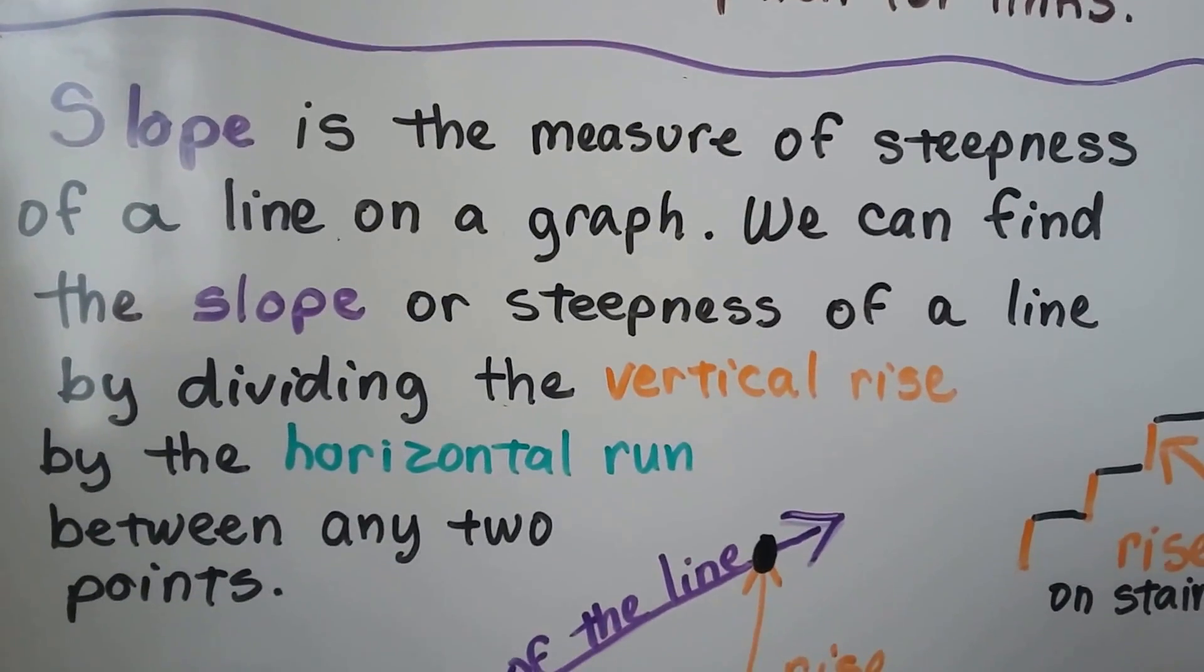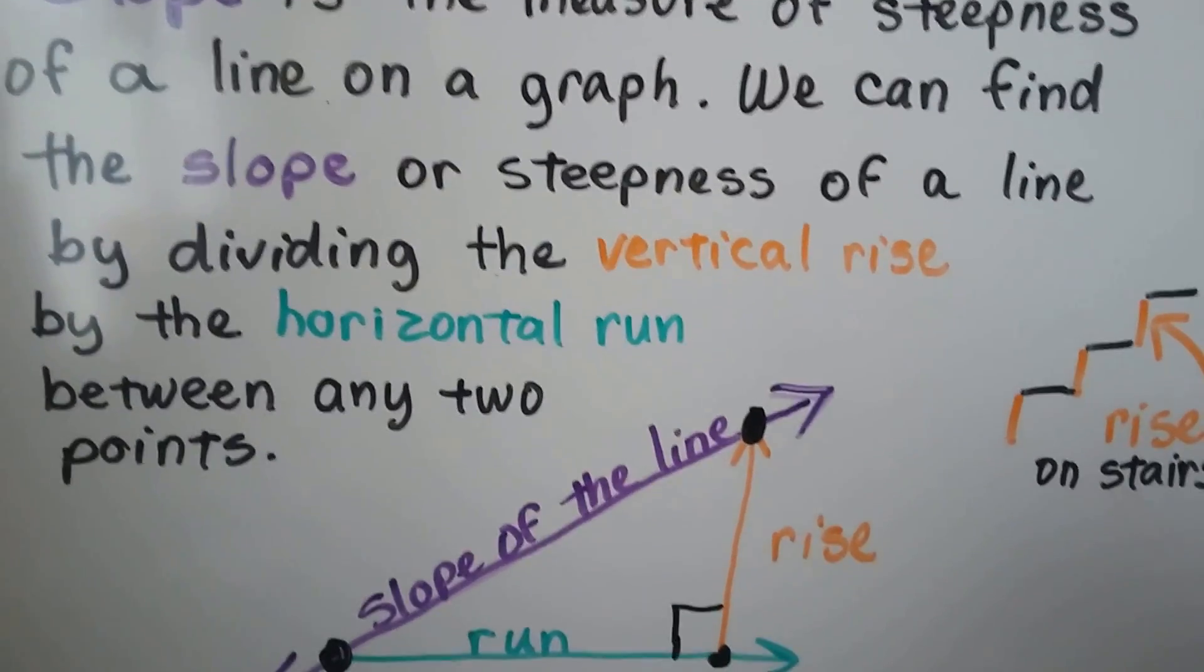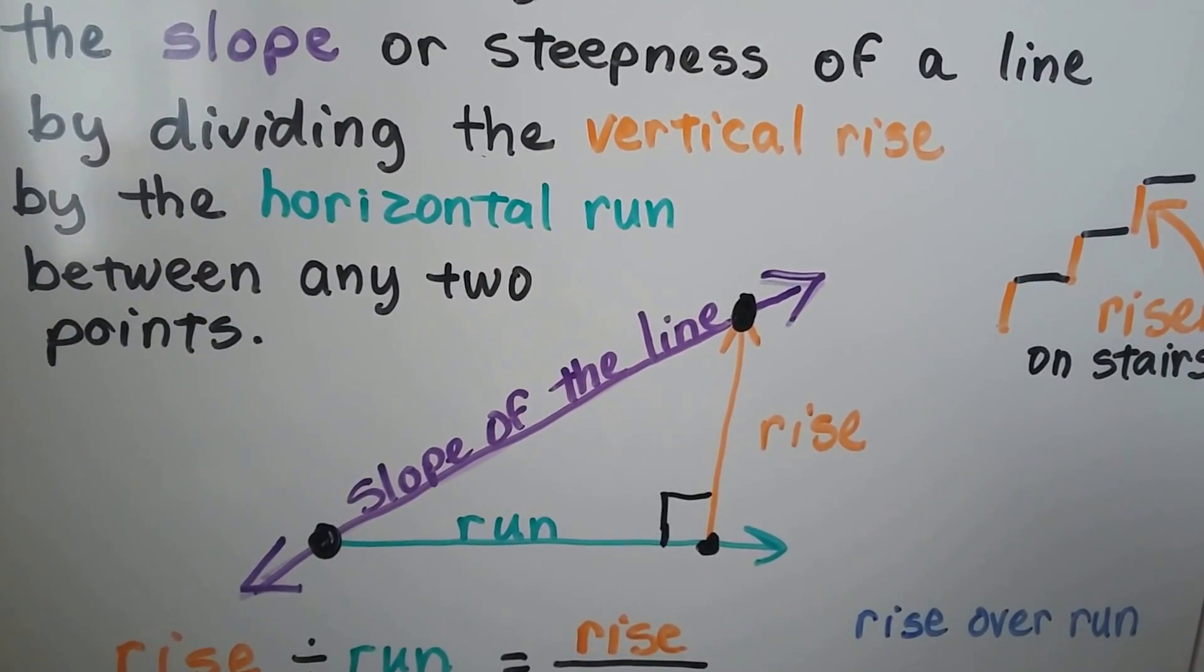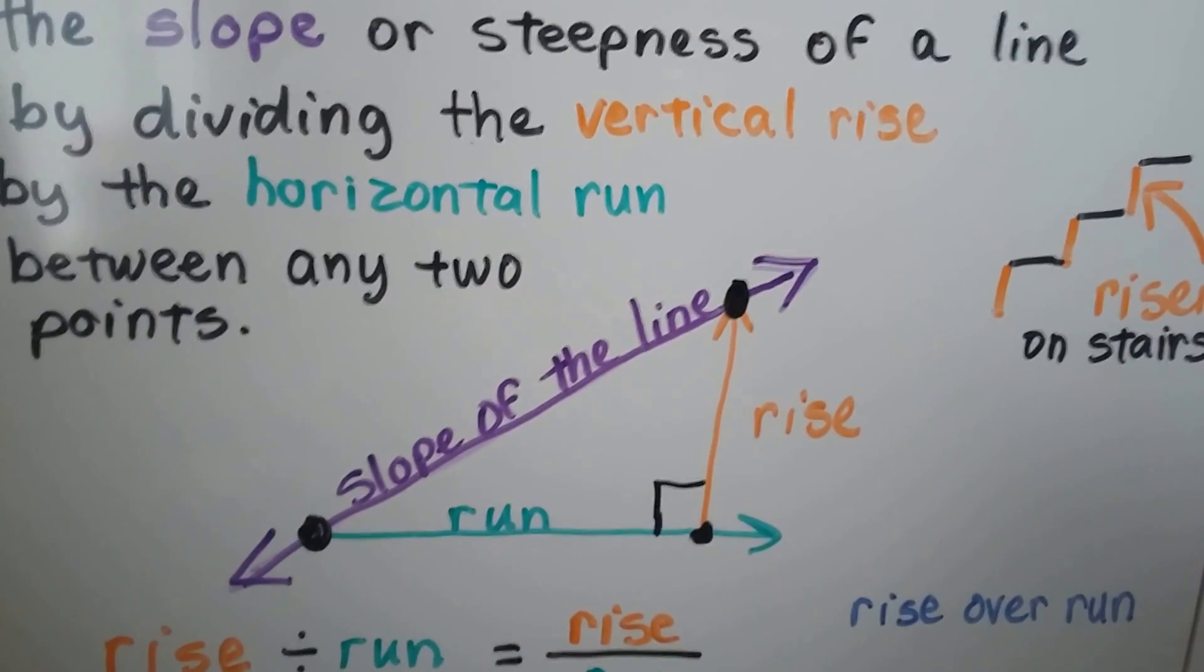Slope is the measure of steepness of a line on a graph. We can find the slope or steepness of a line by dividing the vertical rise by the horizontal run between any two points.